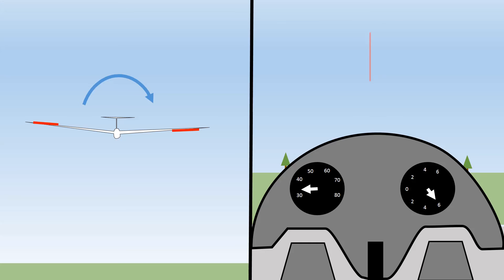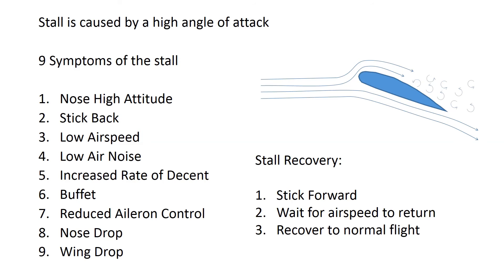This can start a spin, which we'll talk about in another video. In summary, in this introduction to the stall, we've identified that the stall is caused by a high angle of attack, and that there are nine symptoms of the stall which may or may not all be present during a stall.